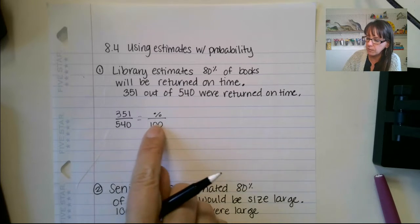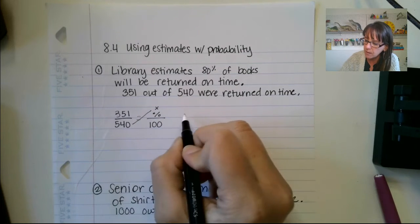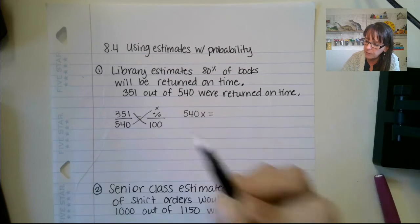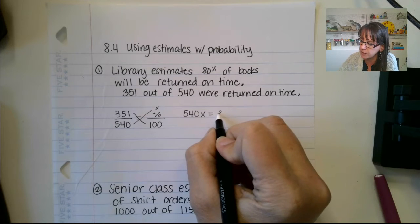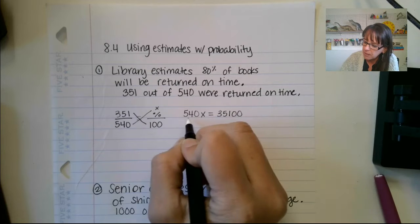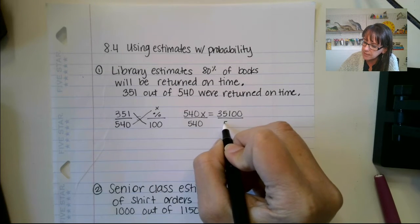All right, so we're going to say that this is our x here because that's what we're looking for is our percent. We're going to cross multiply. 540x equals 351 times 100. So 351 with one, two zeros.